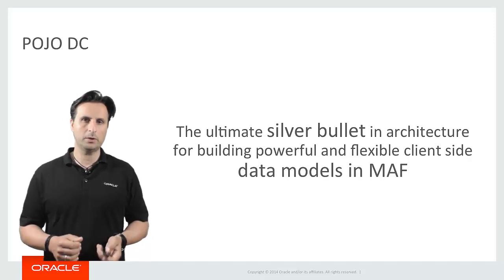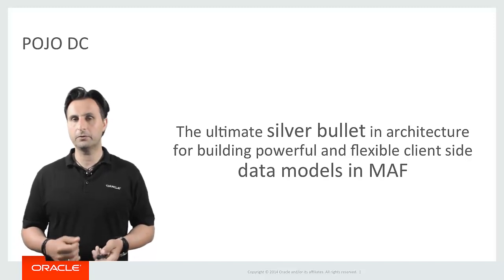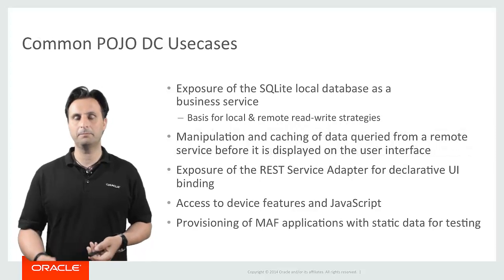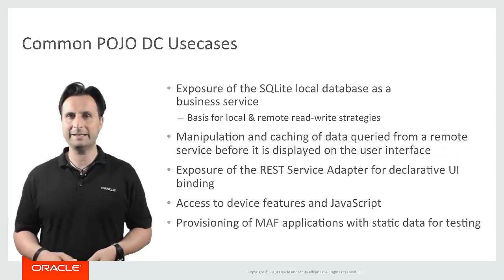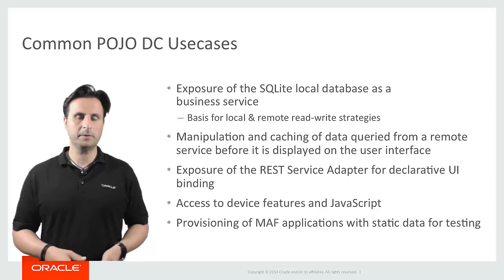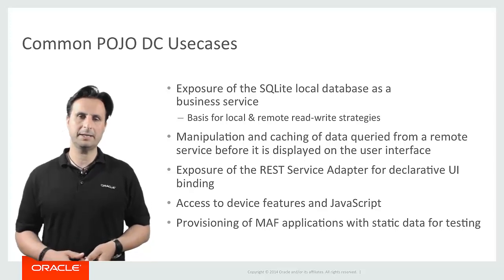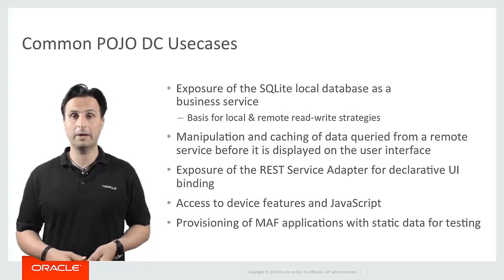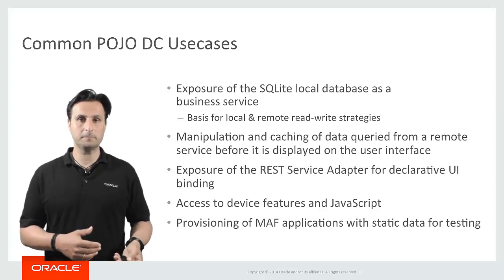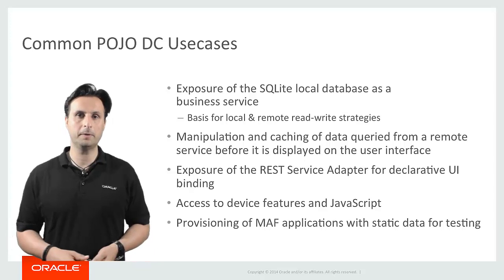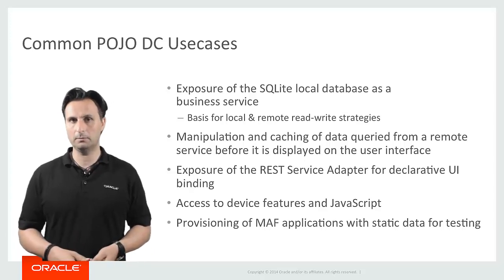There are use cases where you want to use the Pojo Data Control. For example, to visualize data or pull data out of the SQLite database and show it on the user interface in a declarative manner, you want to use the Pojo Data Control to talk to the SQLite database, get the collection of data out — or write back to it — and then expose the Pojo Data Control on the Data Control panel and drag and drop UI components accordingly.